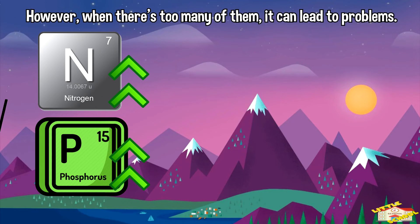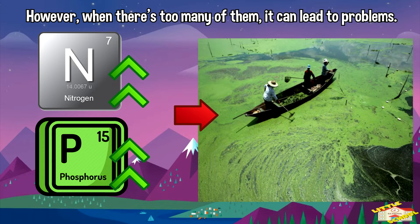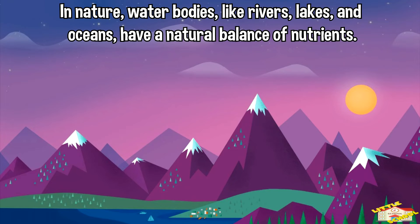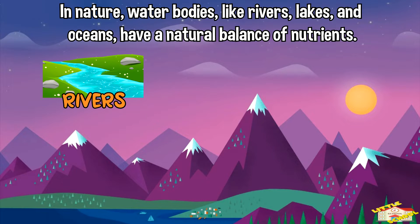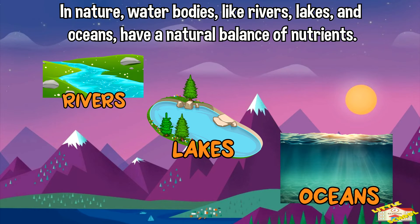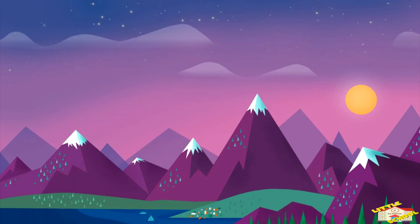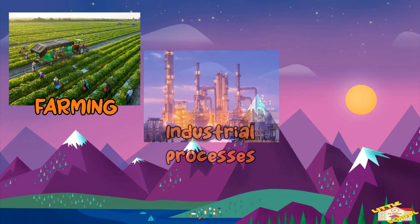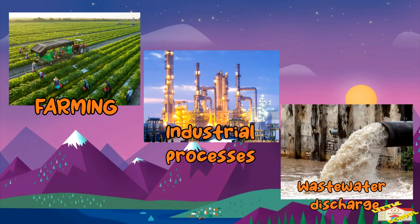However, when there are too many of them, it can lead to problems in nature. Water bodies like rivers, lakes, and oceans have a natural balance of nutrients, but human activities such as farming, industrial processes, and wastewater discharge can introduce excessive amounts of nutrients into the water.